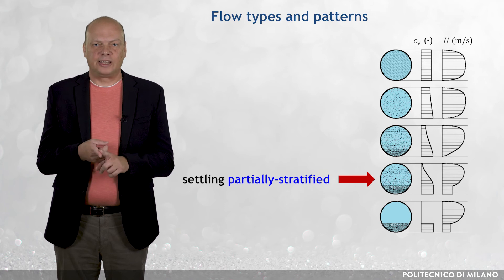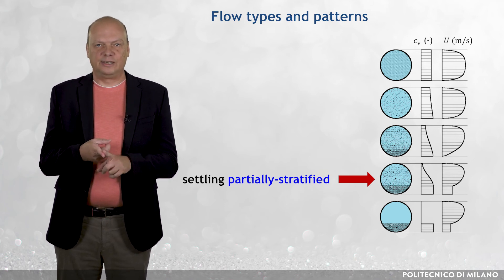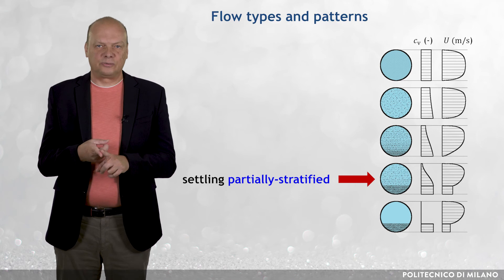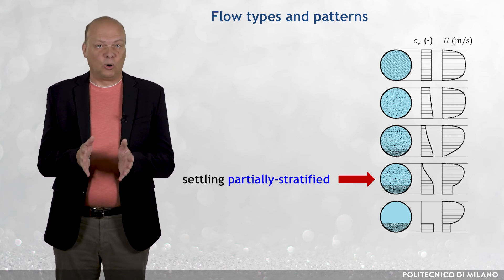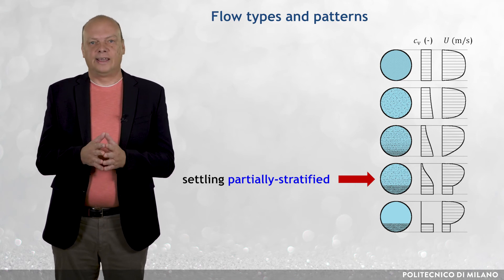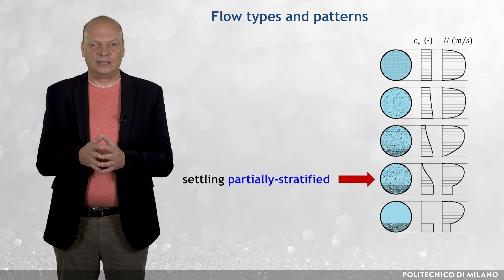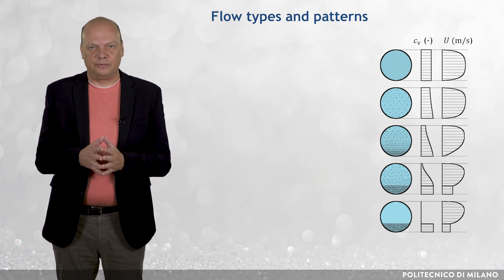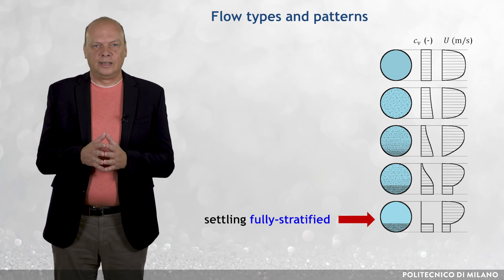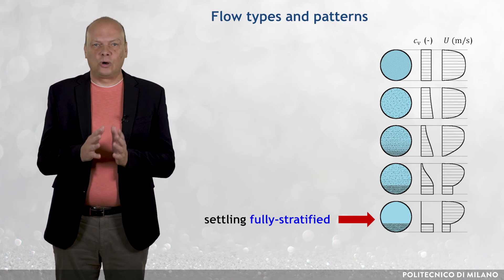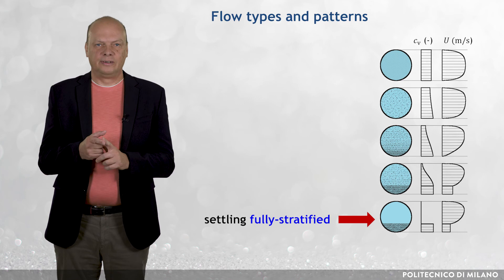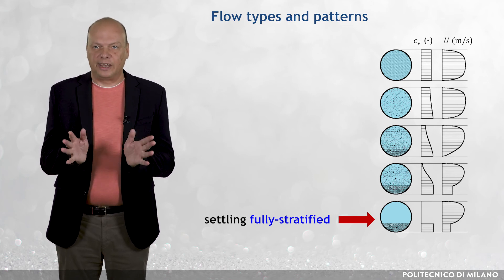The pipe cross section average slip is significant and thus the delivered concentration CVD is smaller than the spatial concentration CVI. Fully stratified flow occurs if virtually all of the transported particles occupy the bed and turbulent suspension of particles is ineffective.